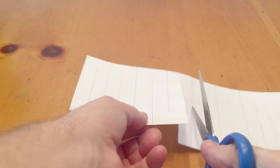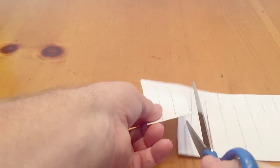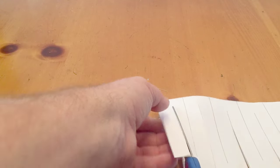Then you're going to flip it over and do all the cuts the other way, leaving a little bit about a quarter inch on each side.